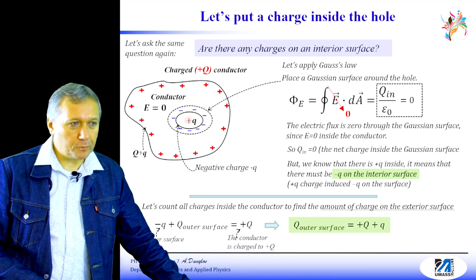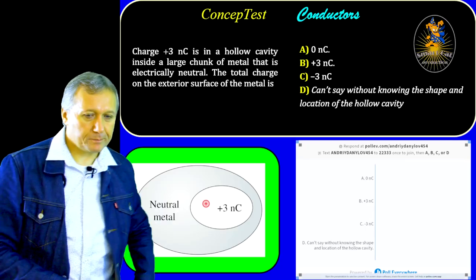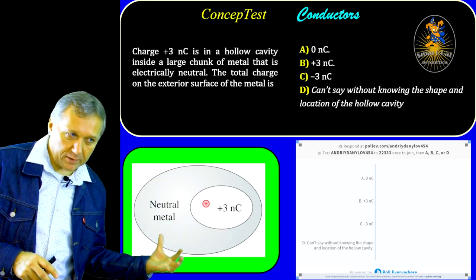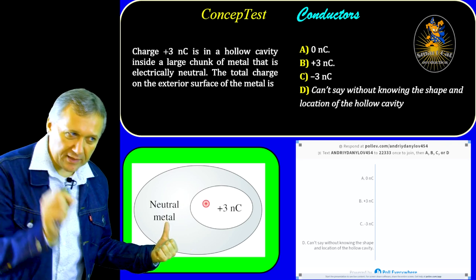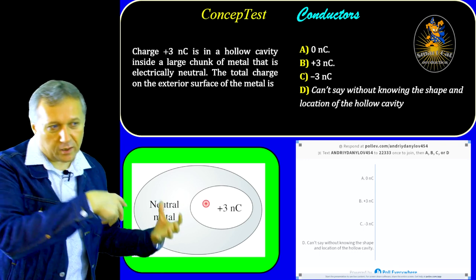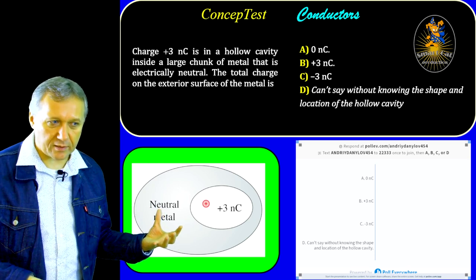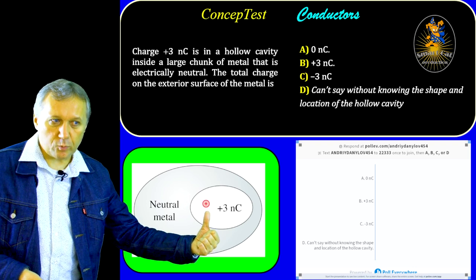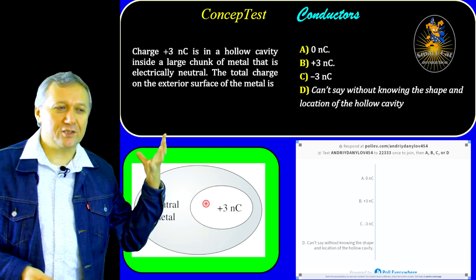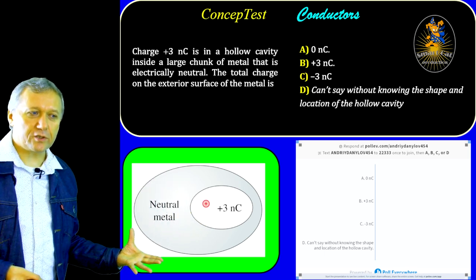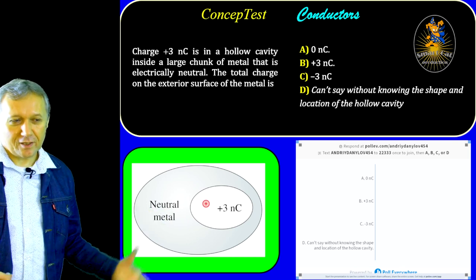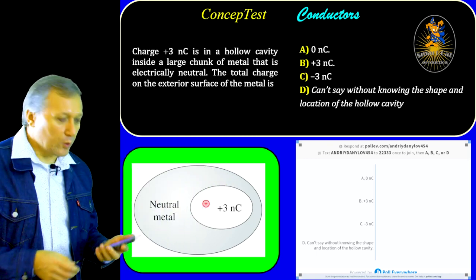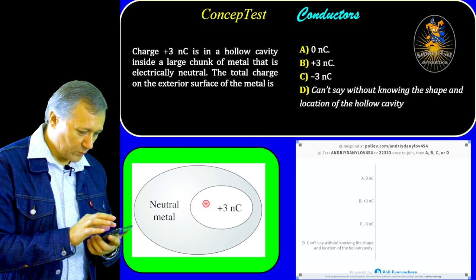Another question for you. We have a piece of metal — some kind of ellipsoid — that is electrically neutral, meaning the net charge is zero. There is a hole, and inside of that hole there is a positive charge of plus three nanocoulombs. The question: what is the total charge on the exterior surface of the metal? You see the options A, B, C, D.